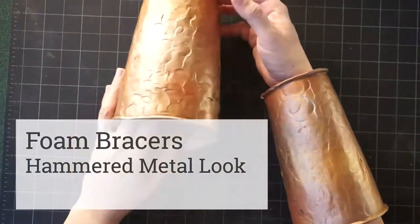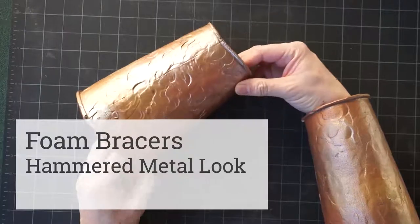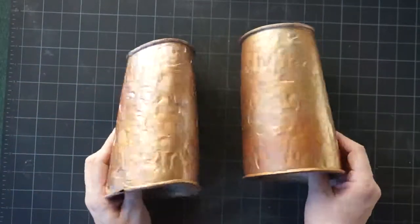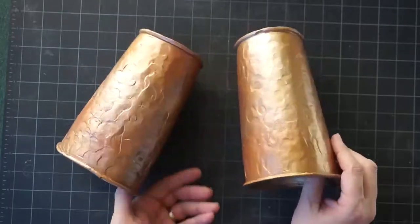Today I would like to show you how to make foam bracers that look like they're made out of hammered metal. This was a piece of my Centurion costume for Rory Williams from Doctor Who.